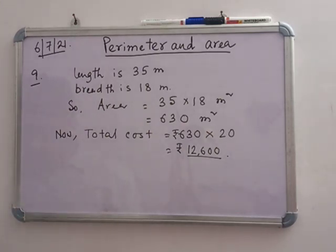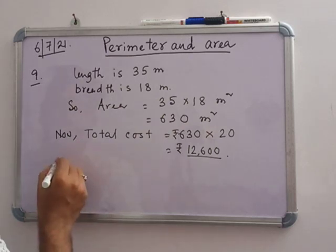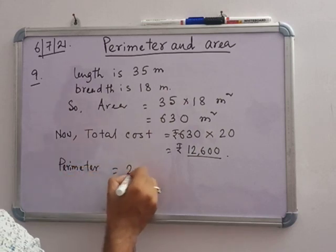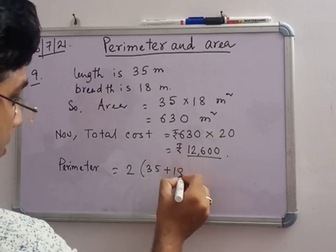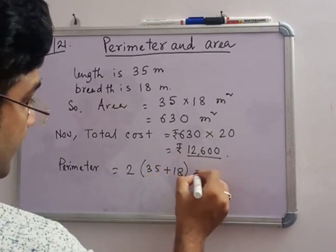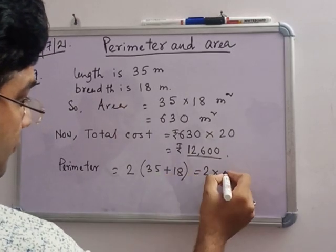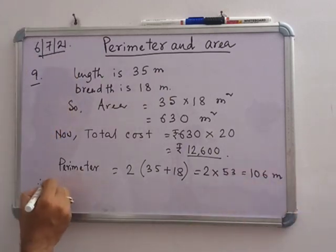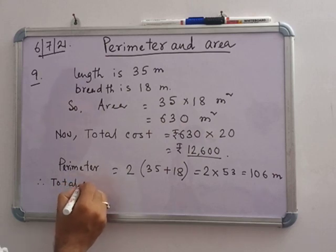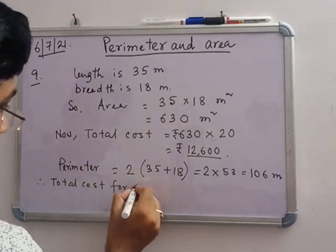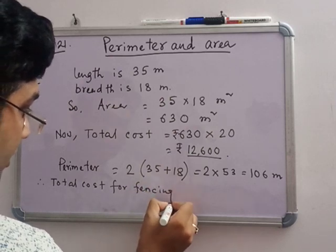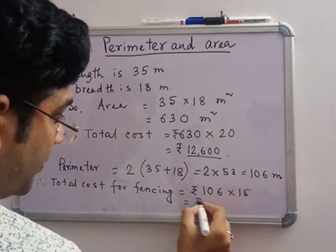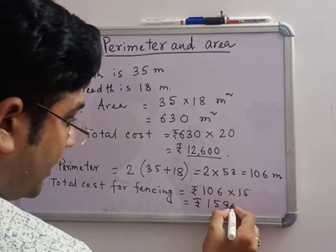Now for fencing, rupees 15 per meter. That means the perimeter is 2 into 35 plus 18, that means 2 into 53, that means 106 meter. So total cost for fencing is rupees 106 into 15, that means rupees 1590.